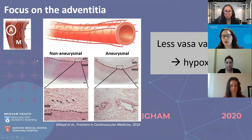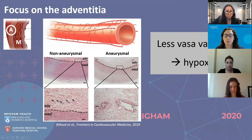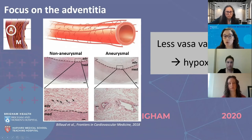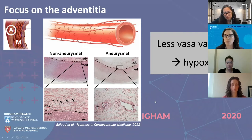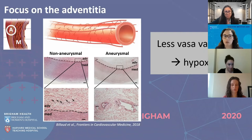If we focus on the adventitia, it is mostly connective tissue but also has what we call vasa vasorum — these small vessels that surround the aorta and provide nutrients and oxygen to the outer layers. One of our first observations was that in non-aneurysmal cross sections you can see nice small vessels in the adventitia, but in aneurysmal cross sections there are larger but also far fewer vasa vasorum. We found that there are less vasa vasorum in aneurysmal aorta, which led us to hypothesize that there is possibly hypoxia in ascending aortic aneurysm.